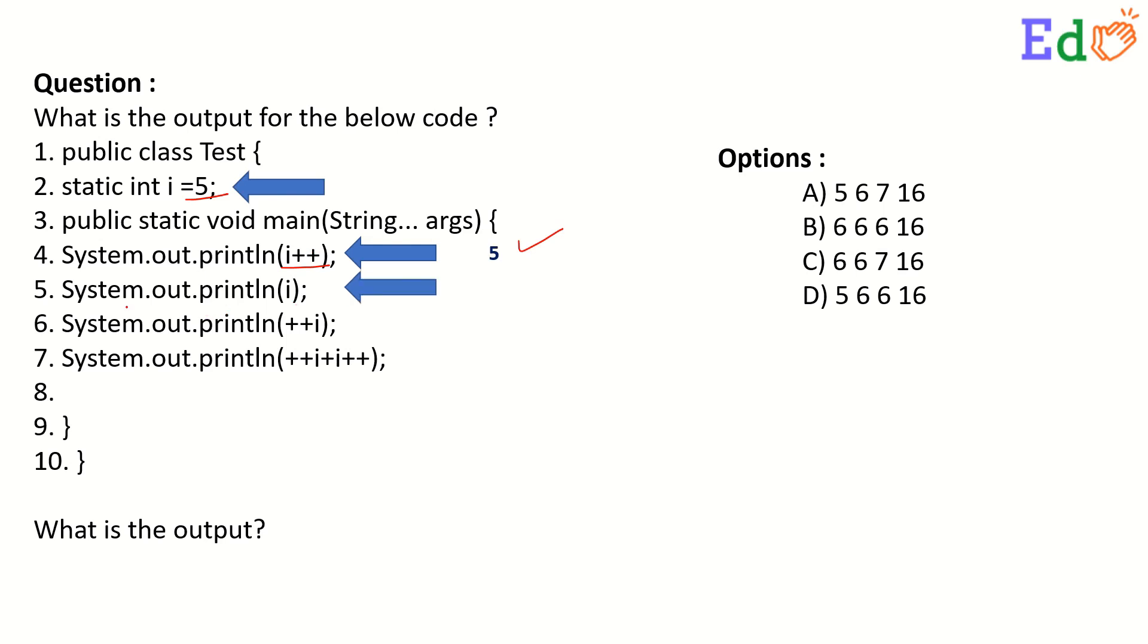Now here system.out.println we are printing i. So it will have the value 6 because here as it was post increment, the value got increased after and it became 6.